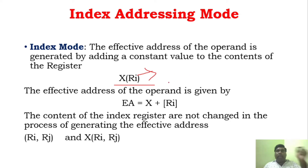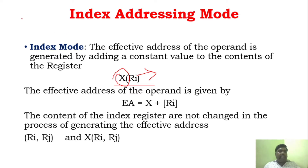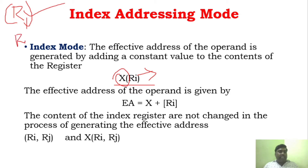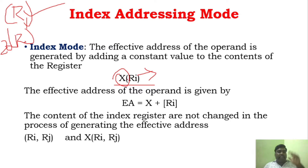The effective address of the operand has to be found. This effective address has to be added with the constant value. X is the constant value. Don't get confused — in the register there will be some value like R1 or R2, and that value will be something like 20 or 30. We need to add the constant value X to the content of the register, and that is called the effective address.